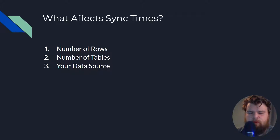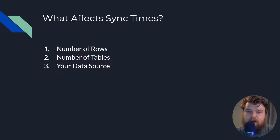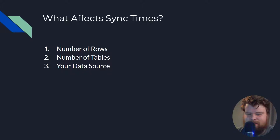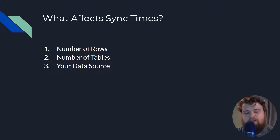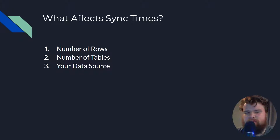The number of rows makes a lot of sense because the amount of data we're trying to bring into our app is going to affect how quickly we can sync. Number of tables affects sync times because AppSheet can only bring in a certain number of tables at a time. If you don't have a lot of tables or you're on a very high plan, your slowest table is what's going to be affecting your sync time the most. Finally, data source matters because not all data sources can sync data as efficiently as each other.